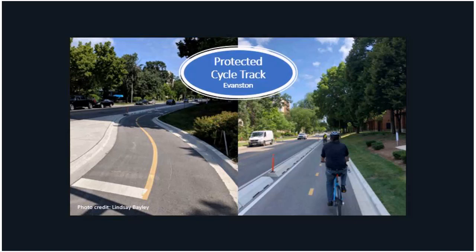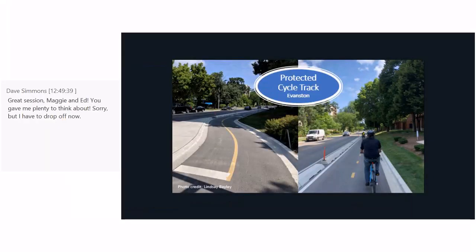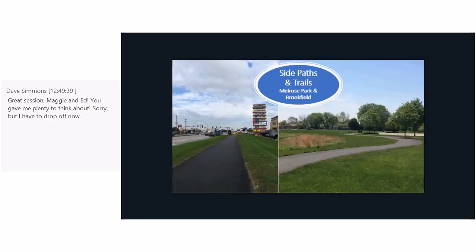Another Evanston example — a protected cycle track on Chicago Avenue and Sheridan. We just did a bike tour of Evanston with municipal staff from around the region to show them different facilities, and we biked on this — it was very comfortable. It's near Northwestern University. These types of facilities work better when there aren't many driveways that could cause conflicts.